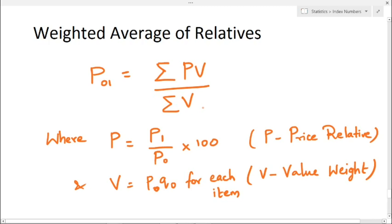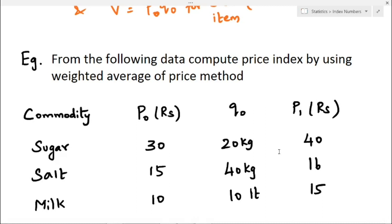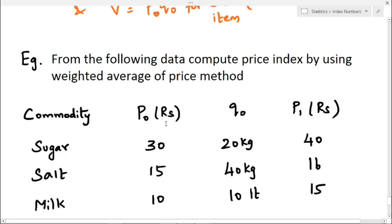Now we will solve an example. From the following data we have to find the price index by using the weighted average of price relative method. The data includes commodity, P0, Q0, and P1. The commodities given are sugar, salt, and milk. P0 is the base year price given in rupees.